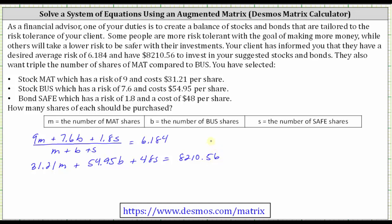And then for the third equation, the client wants triple the number of shares of MAT compared to BUS, and therefore M must equal 3B. However many shares of BUS there are, the number of MAT shares is always triple the amount.